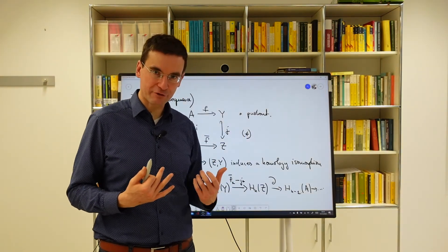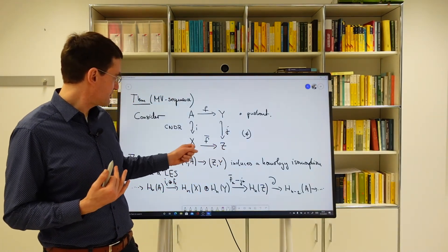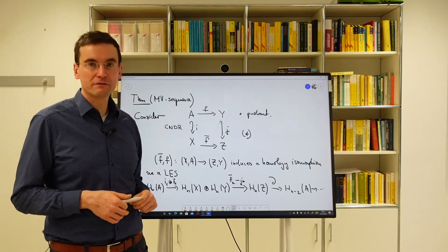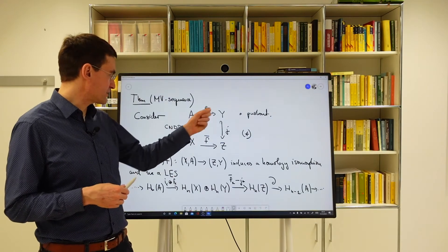So what's the excisive triad in this situation? Well it's the triad Z with the subspaces X and Y. Because if F is also an inclusion map then A is just the intersection of X and Y.